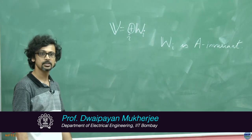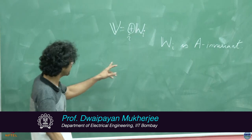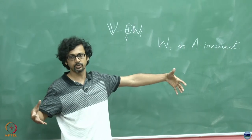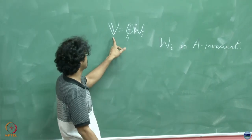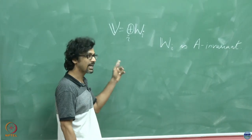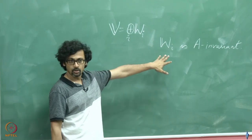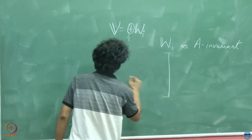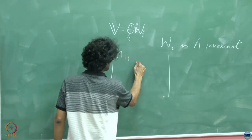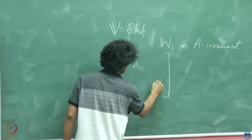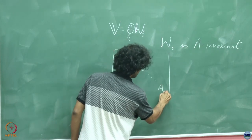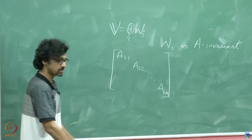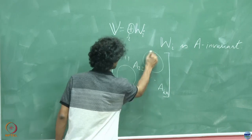then we are in for a special property: find a basis for each of these individual W_i's, stack them up together, and they will form a basis for V. In terms of that basis, if you represent your operator A, it gives a block diagonal structure A_11, A_22, until A_KK — which is the best we can possibly do.